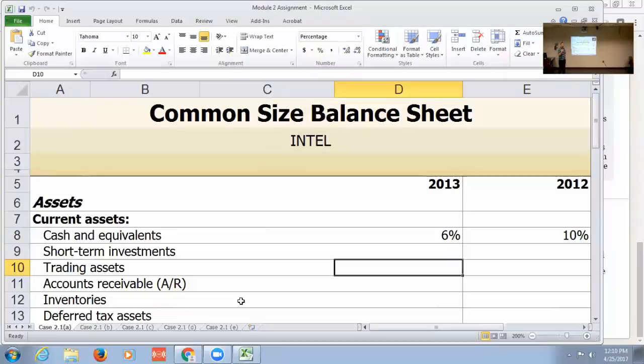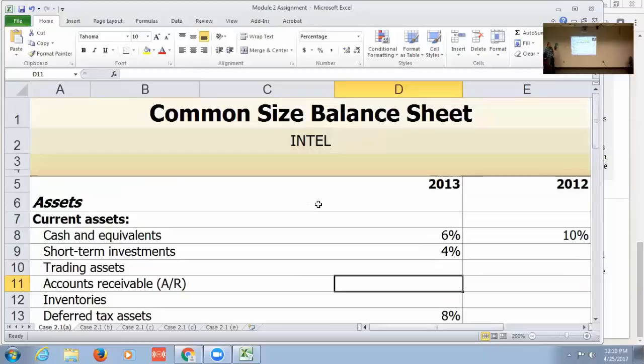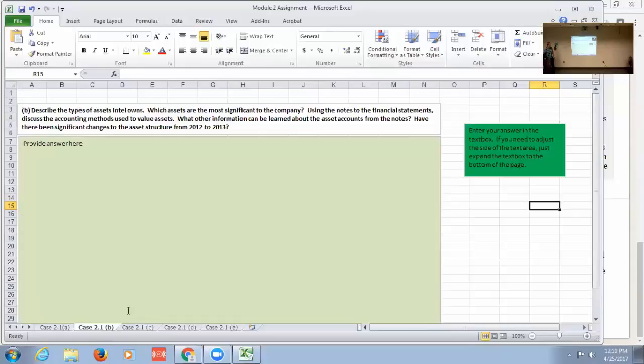I give them a template—I've got the formulas built in. I want them to go look up the information on this company, Intel, from 2012 and 13, and then basically perform calculations. As they enter a number, it's going to automatically populate. It's a good way to kind of self-check what they're doing. For the first problem here, they're just basically going to do calculations and get their balance sheet completed.